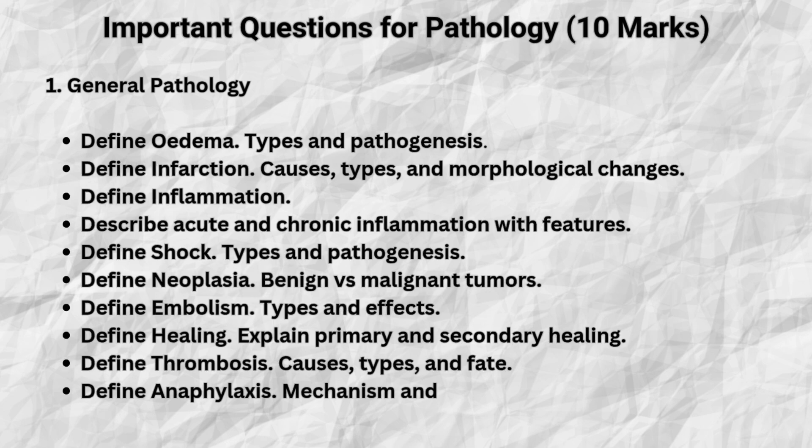Let's begin with general pathology. Here are some high yield questions commonly asked for 10 marks. Define edema, its types and pathogenesis. Define infarction, causes, types and morphological changes. Define inflammation with details on acute and chronic inflammation. Define shock, its types and pathogenesis. Define neoplasia and compare benign versus malignant tumors. Define embolism, types and effects. Define healing with primary and secondary healing explained.